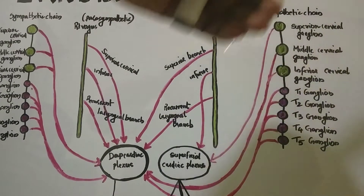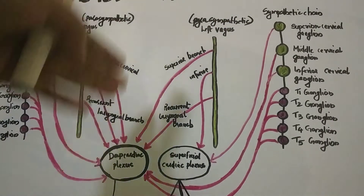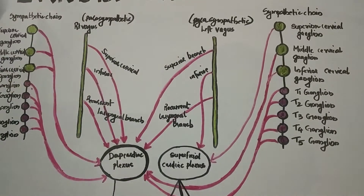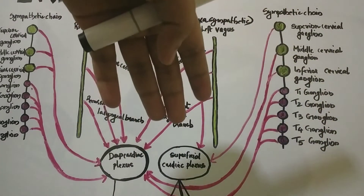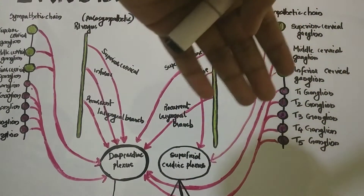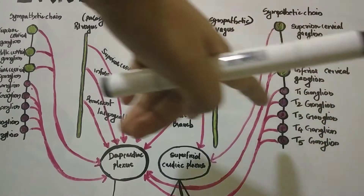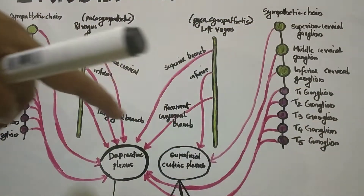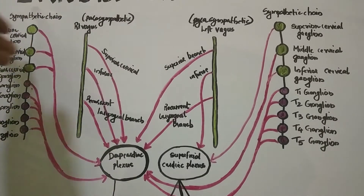Now I will explain this diagram. This is the left sympathetic chain and this is the left vagus, and this is the right sympathetic chain and this is the right vagus. The branches of the left sympathetic chain are cardio-acceleratory in function: there is the superior cervical ganglion, middle cervical ganglion, inferior cervical ganglion, and T1 to T5 ganglia. In a similar pattern, the right sympathetic chain also contains these branches — the right superior cervical, middle cervical, inferior cervical, and T1 to T3 ganglia.